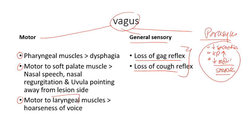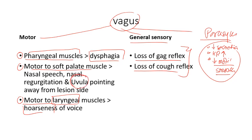Vagus nerve damage causes hoarseness due to damage to the pharyngeal muscles. There will also be dysphagia. If the soft palate muscles are damaged, an important sign is uvular deviation away from the lesion side. In most cranial nerve lesions, deviation is away from the lesion side, except for the hypoglossal nerve, where the tongue protrudes towards the lesion side.